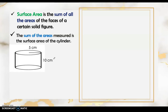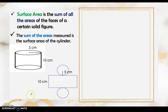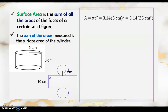Let's have an example. Here is a cylinder with the radius of the circle measuring 5 centimeters and the height of the cylinder measuring 10 centimeters. To find the surface area of this figure, we need to get the area of each shape. It is easier to visualize if we make a net of the cylinder. The radius is 5 centimeters and the height is 10 centimeters.